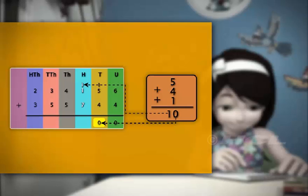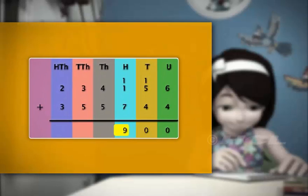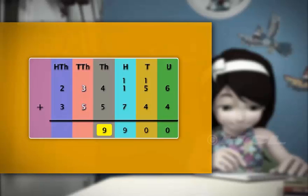Adding the digits in the hundreds column, we get 9. Next, we add the digits in the thousands column. 4 plus 5 gives us 9. Adding 3 and 5 in the ten-thousands column, we get 8. We now add 2 and 3 in the hundreds-thousands column to get 5.